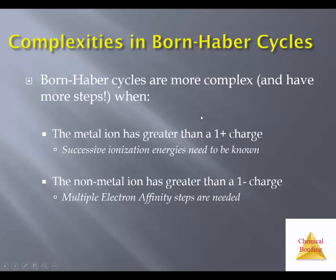Not all Born-Haber cycles are equally simple. The Born-Haber cycle you've seen so far in this video is among the simplest there is. Cycles will be more complex, having more steps, if you're dealing with an ionic compound in which the metal ion has a greater than one positive charge. In that case, if more than one electron is removed from the metal, you have to add up the energies associated with the first, second, and/or third ionization of the metal — you have to know all those ionization energies, and they will appear as separate steps. Similarly, if you're dealing with an ionic compound in which the non-metal ion has a greater than one minus charge, multiple electron affinity steps are needed.